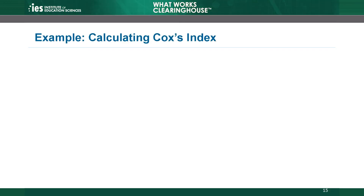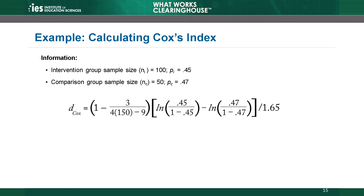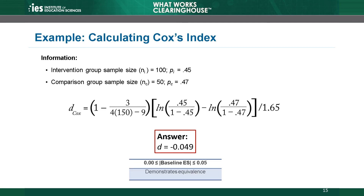This example walks through how to calculate Cox's index manually. In the example, 100 youth are in the intervention group and 50 youth are in the comparison group. The intervention group is 45% white, while the comparison group is 47% white. On this measure, the groups are equivalent at baseline, as the effect size is negative 0.049 standard deviations. The baseline difference falls within the acceptable range according to the equivalence standard, and the WWC would not require a statistical adjustment for the baseline difference.